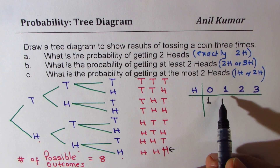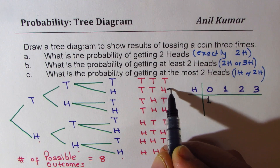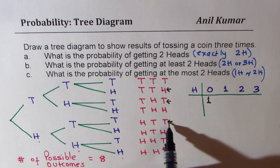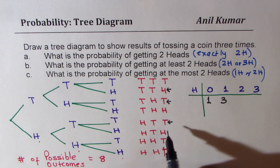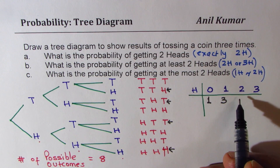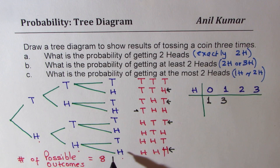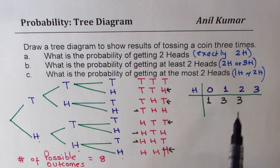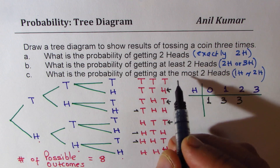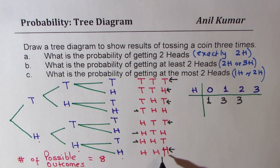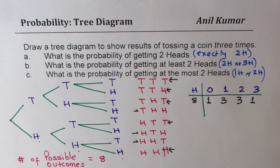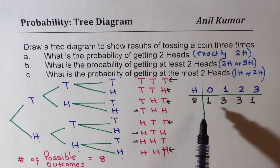For just one head, how many combinations do we have? We have one, two, and three — so there are three combinations with just one head. How about with two heads? We have this with two heads, then this with two heads, and again one more — so there are three with two heads. In all we have eight combinations total. That is clear now.